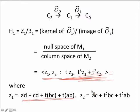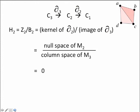Let's also calculate H-2. H-2 was easy because our null space was zero. Since our null space is zero, we have automatically zero. We also didn't have any three-dimensional complexes, so the image of Boundary 3 would also be zero since C-3 is zero. There are no spheres or two-dimensional holes here.